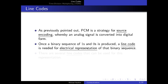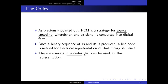Once we have our binary sequence of ones and zeros, we need to answer a question: how can we electrically represent these ones and zeros? Is it positive 5 volts for 1 and 0 volts for 0, or positive 5 volts and minus 5 volts for 1 and 0? This is a question of what line code we are going to use. Line codes are the electrical representation of ones and zeros, and there are several types, each with its own spectrum, characteristics, advantages, and disadvantages.